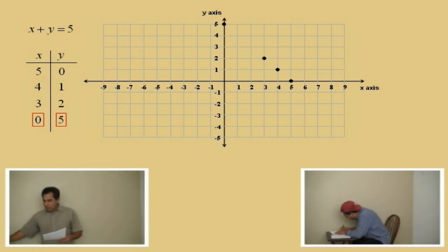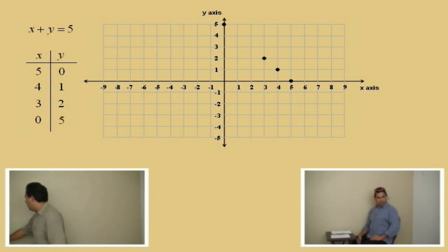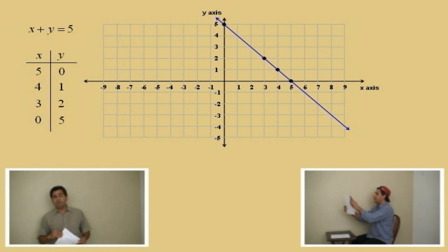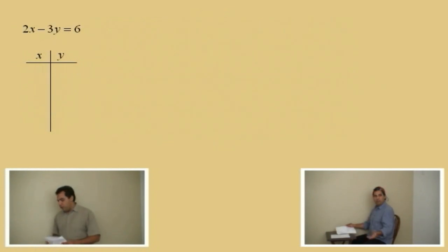And all we have left to do now is do what, Charlie? Draw a line. Connect the line. That's right. We'll connect all the dots, and we'll go ahead and draw our line. There it is. And we're done with that line. So, that one wasn't too bad. So, let's step it up a bit and take on a little bit more complicated linear equation. Okay. Here we go.